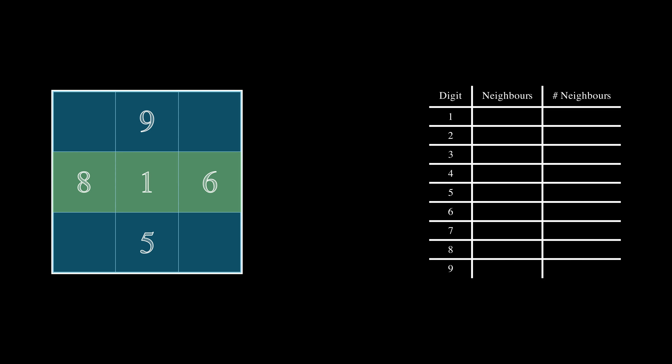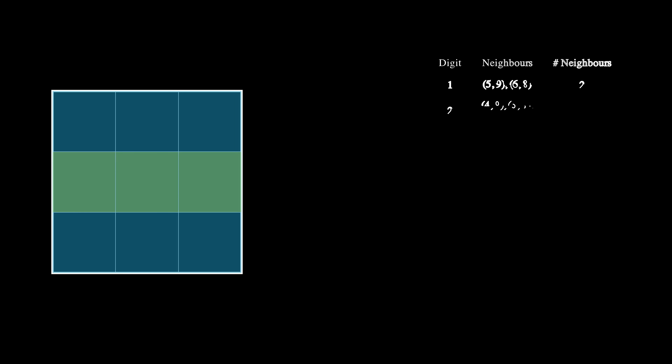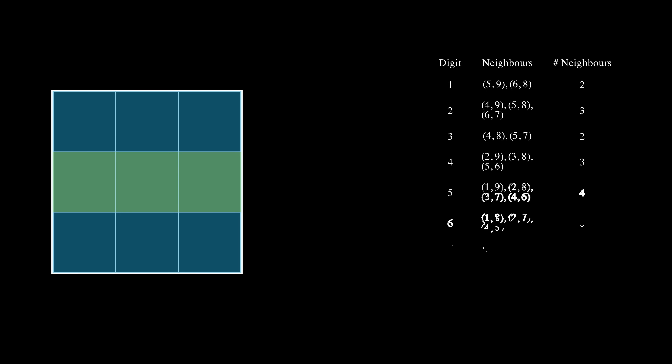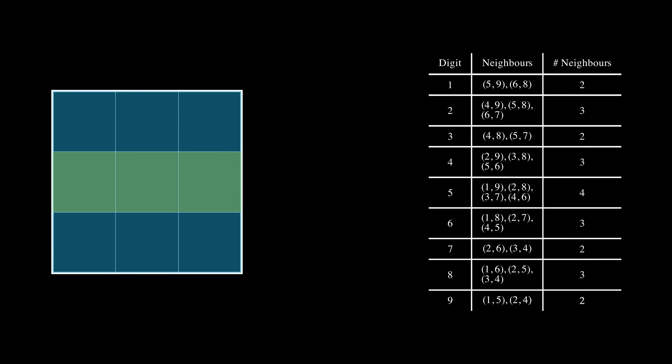I hope it's clear why 1 cannot be in the center. Rather than laboriously stepping through every digit, I'll show what the table looks like for all remaining possible digits. If we look at 2, for example, the two remaining digits must add up to 13, giving us three pairs: 4 and 9, 5 and 8, and 6 and 7. We need a digit that has four sets of neighboring pairs that can get us to 15, and there is only one digit that allows us to do so — that's the 5.